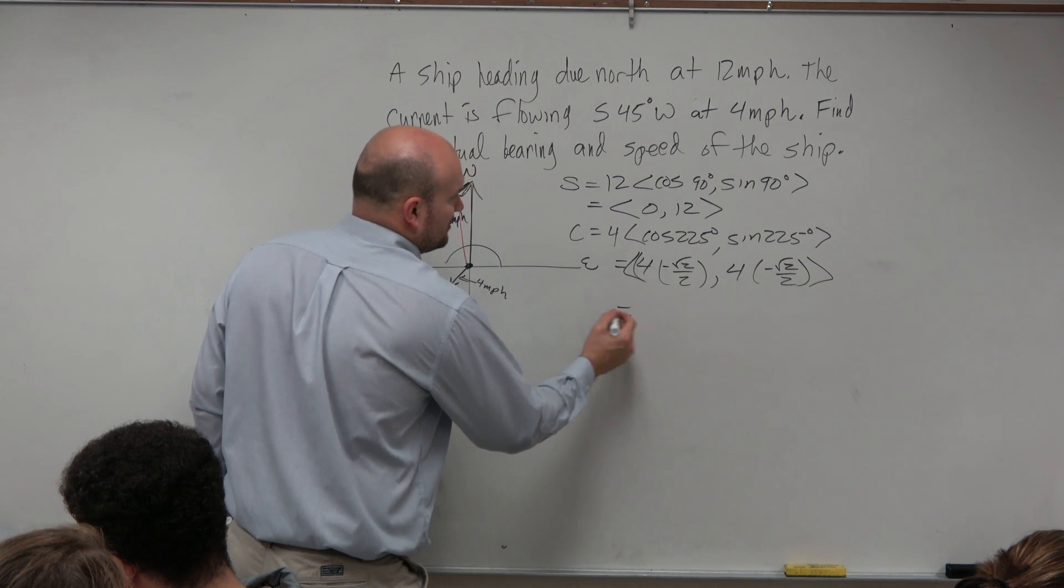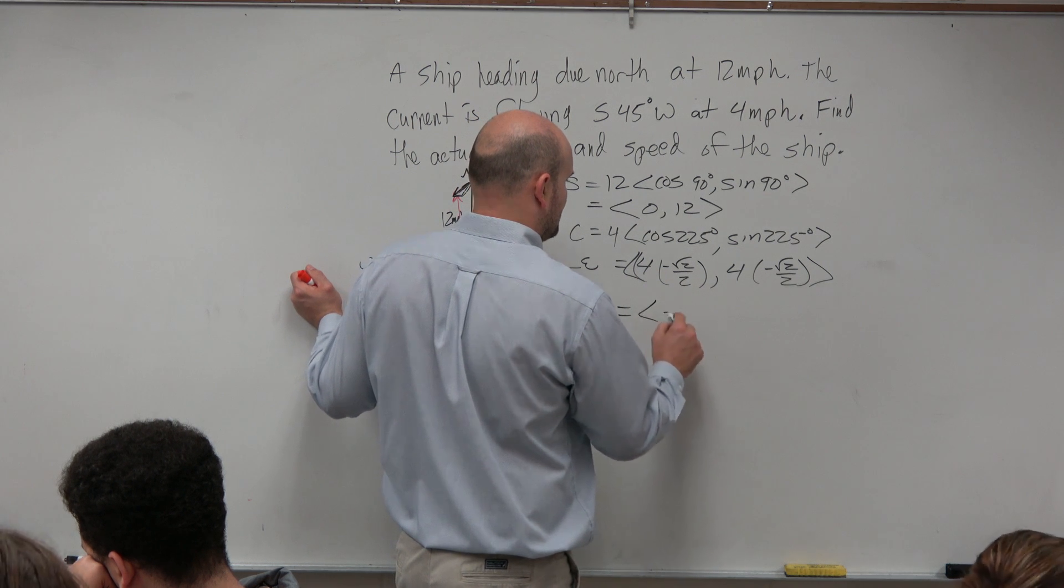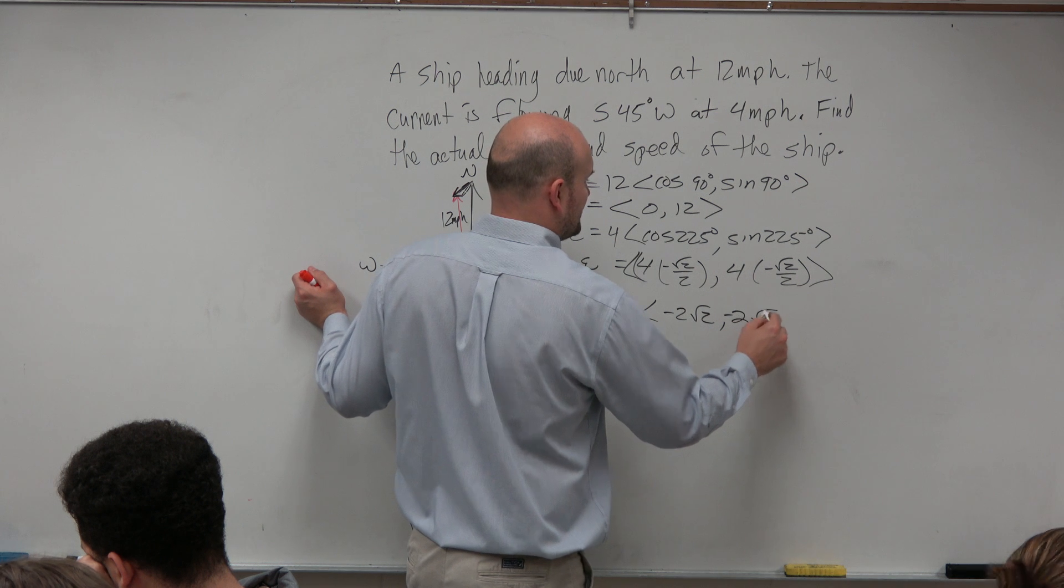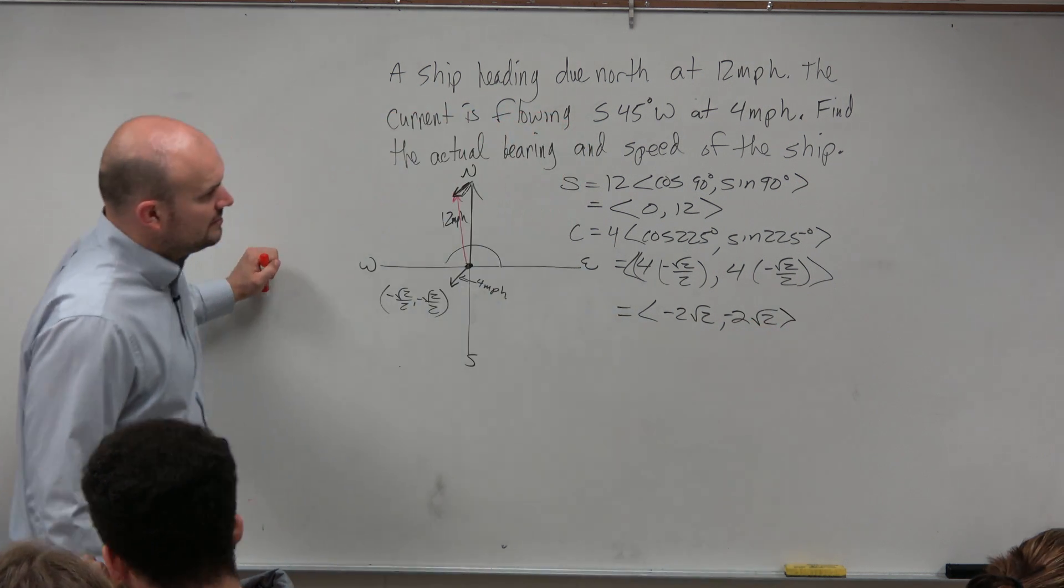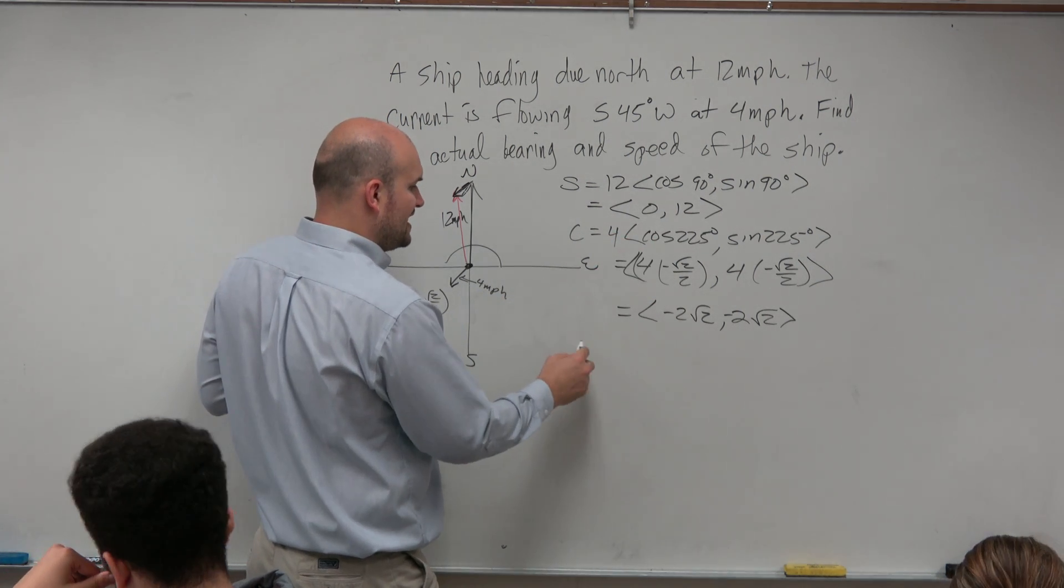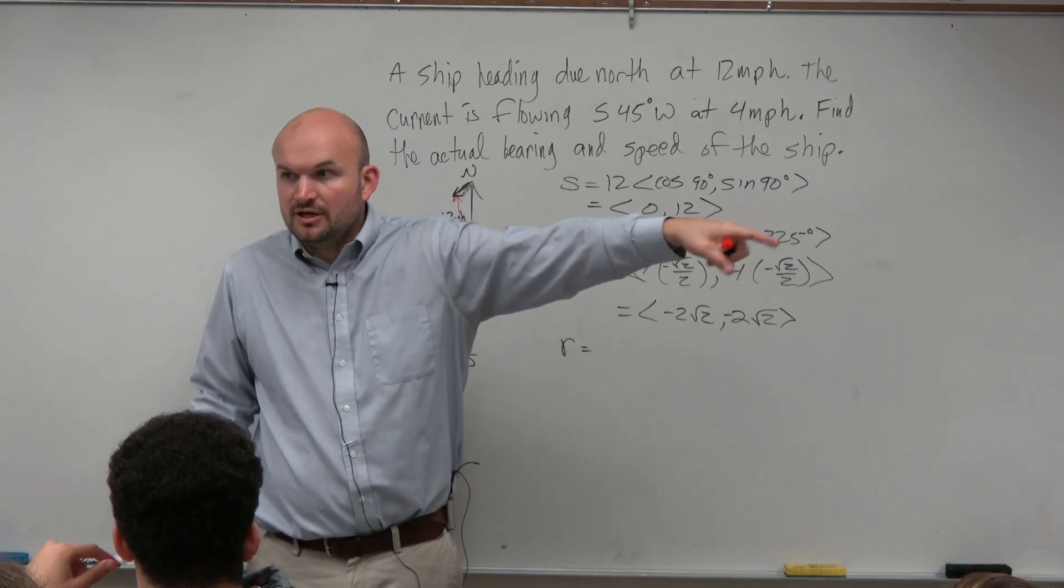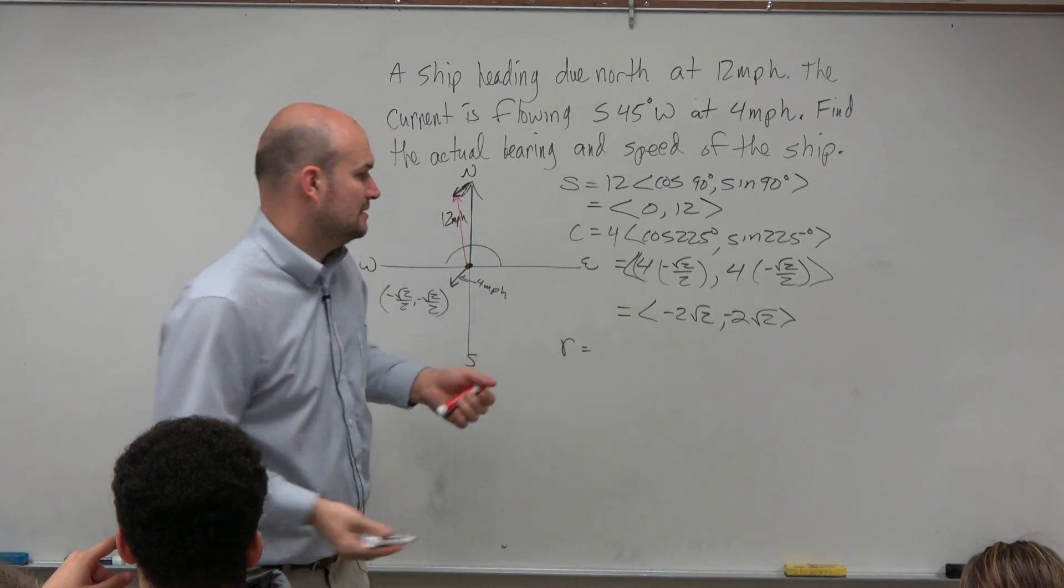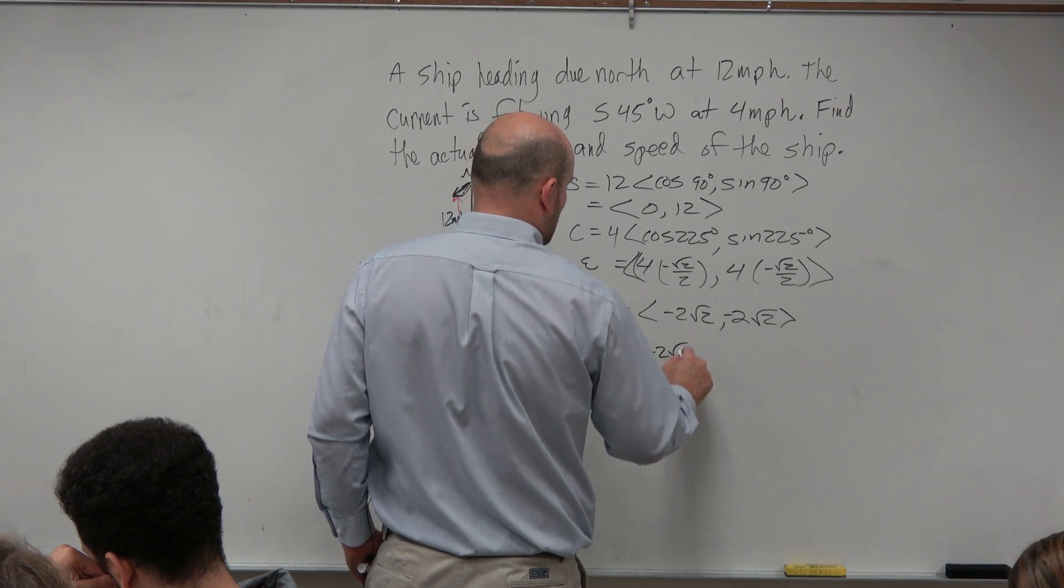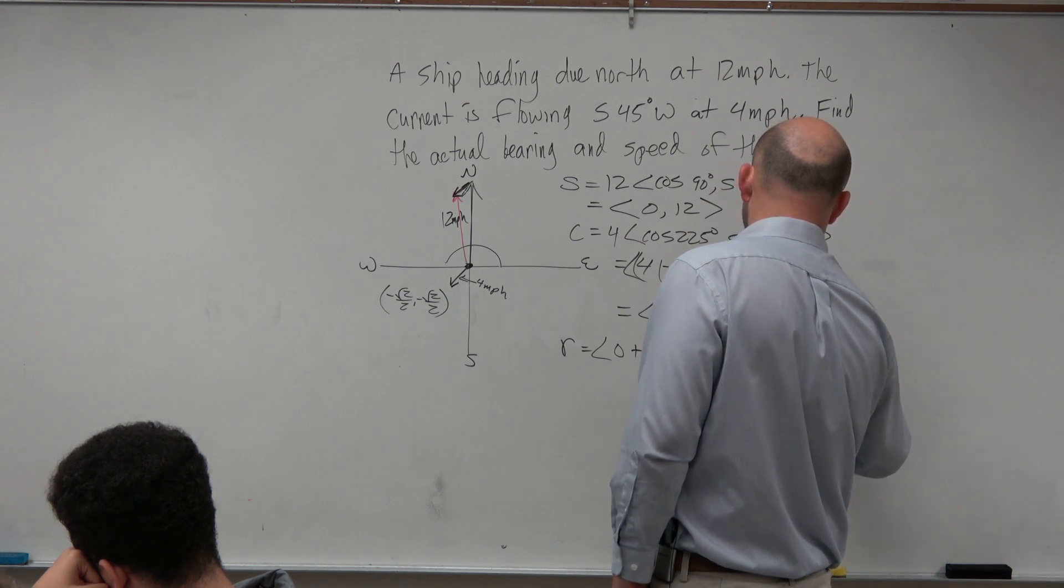And you guys don't need, I mean, you will have a calculator on your test. So this isn't something we would need to be doing in our calculator. But this is going to help us by simplifying this. This will help us with our plug-in in our calculator. So here's our two vectors simplified. And then, guys, if I want to find the resultant vector, all I'm going to do is I'm just going to add the components like your warm-up. You add the first components, and you add the second components. So my resultant vector is going to be 0 plus negative 2 square root of 2. Second component is going to be 12 plus negative 2 square root of 2.